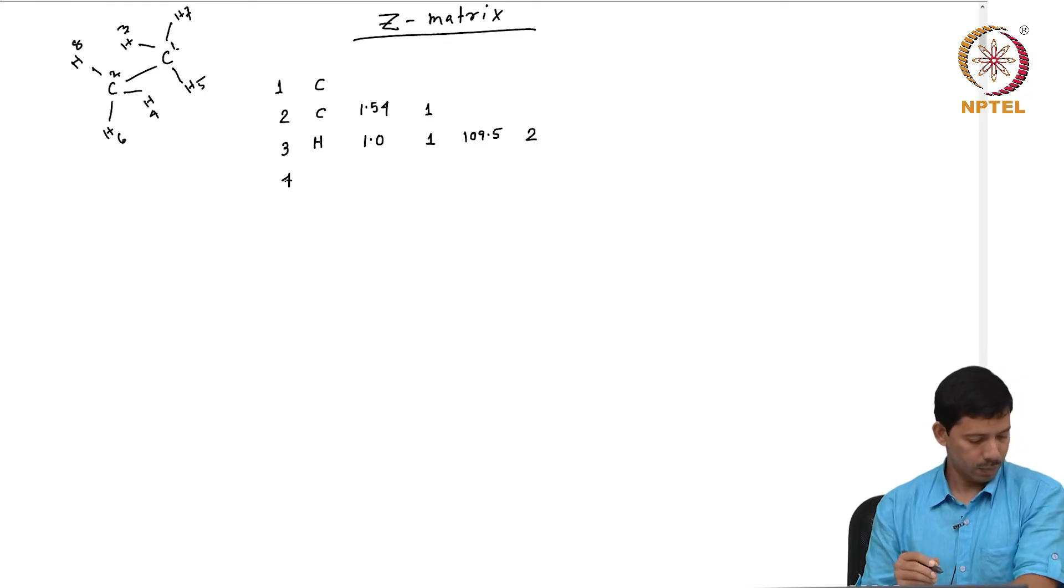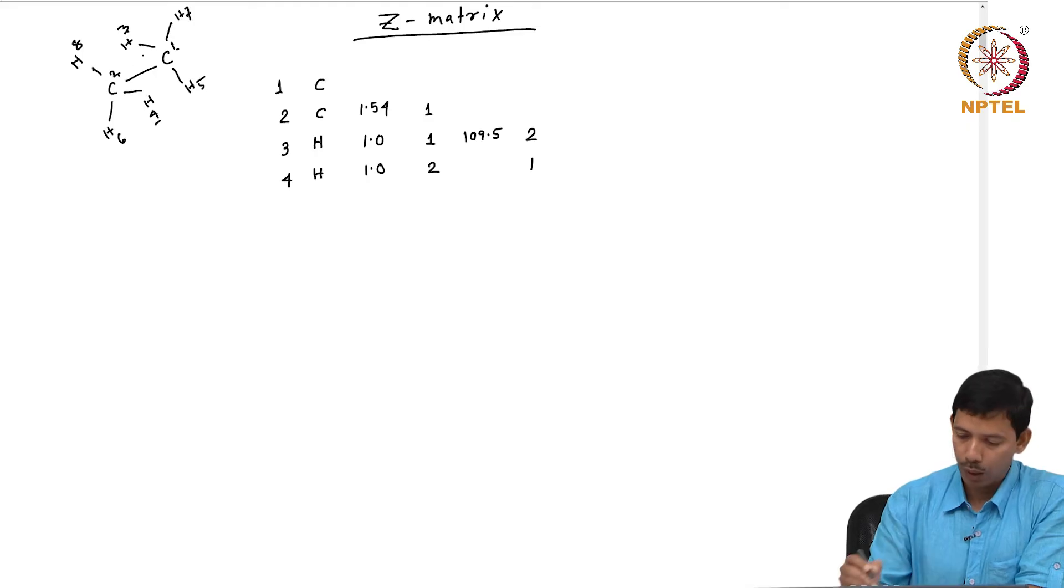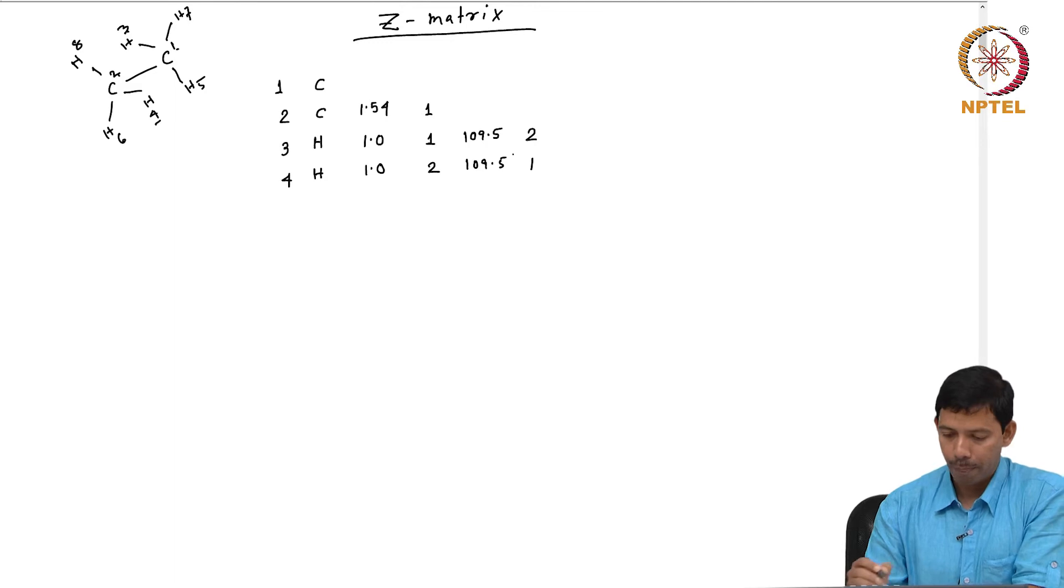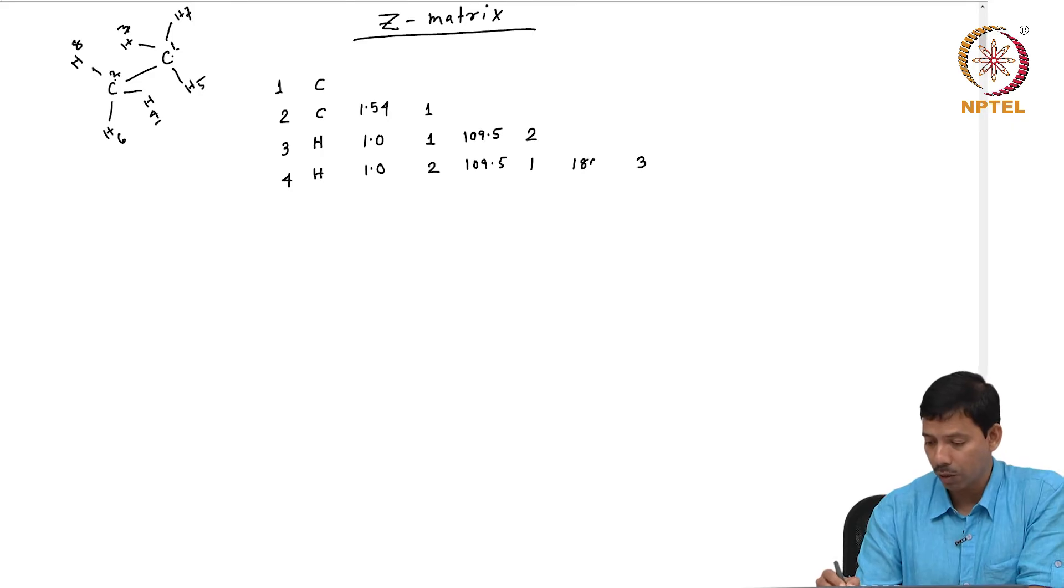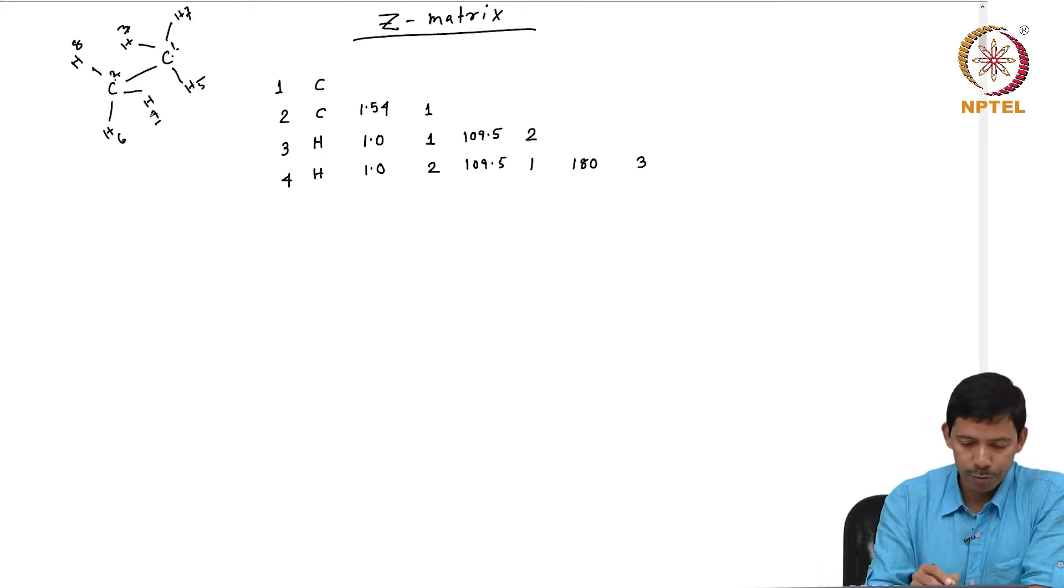Number 4 atom is a hydrogen which is bonded to 2 by a distance of 1. It makes an angle of 4, 2, 1 with the same angle of 109.5. Now 4 also makes a dihedral: 4, 2, 1, 3. That dihedral value is 180 because this is a staggered conformation of ethane. You can see that 4, 2, 1, 3 forms a dihedral of 180 degree.